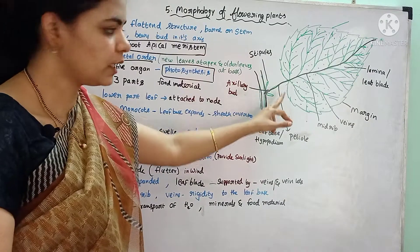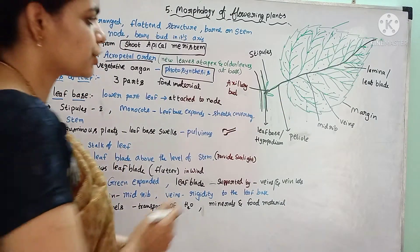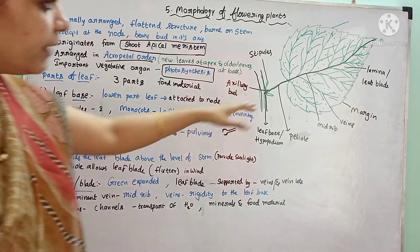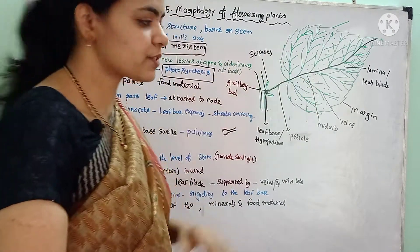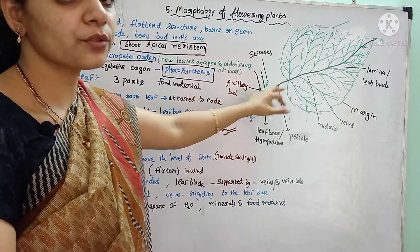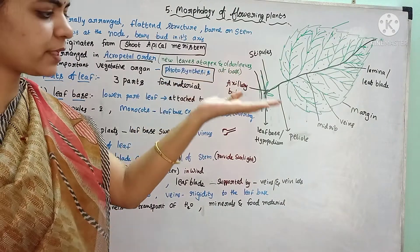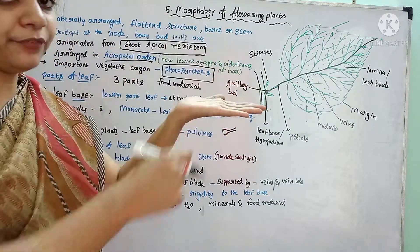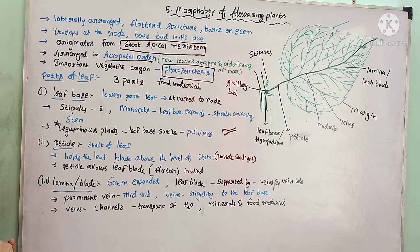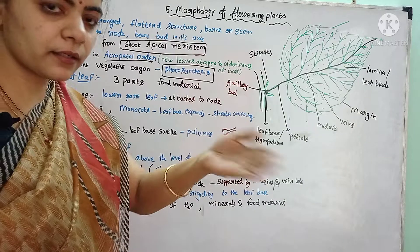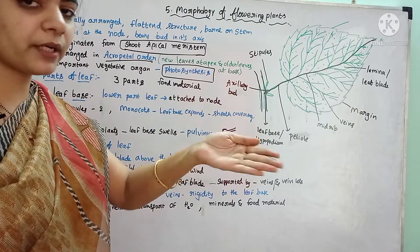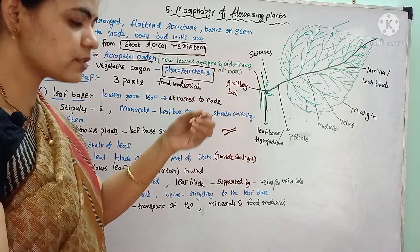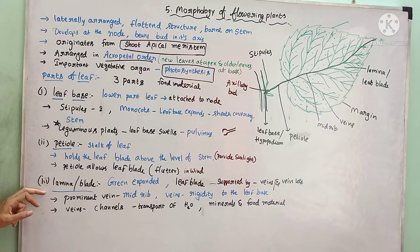Another part of the leaf is the petiole. The stalk of the leaf is called the petiole. It holds the leaf above the level of the stem to allow proper sunlight to fall on the leaves, by means of which it can carry out photosynthesis. The petiole also allows the fluttering of the leaves in the wind, through which the leaf gets proper aeration and a cooling effect.